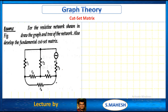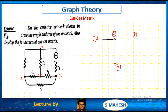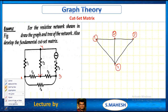Now here I am considering one example: for the resistive network shown in the figure, draw the graph and tree of the network and also develop the fundamental cut set matrix. This is the given network. We don't have any orientation given. From this, we have to get it. There are 4 nodes: 1, 2, 3, 4.